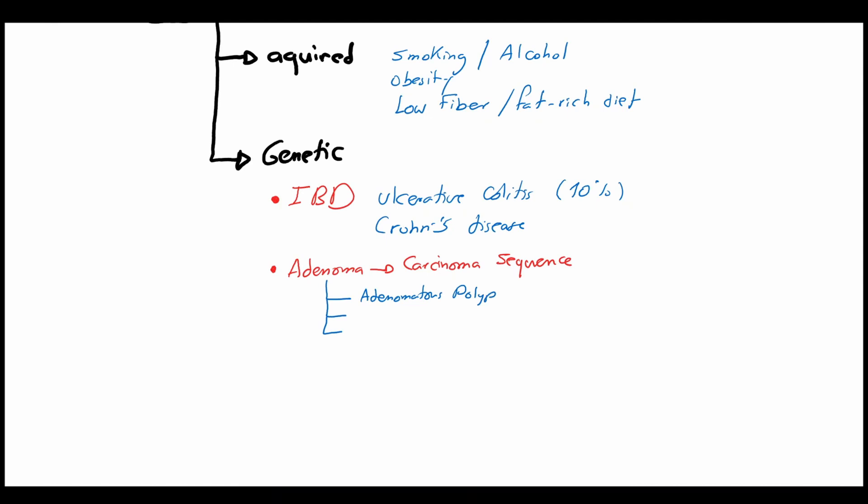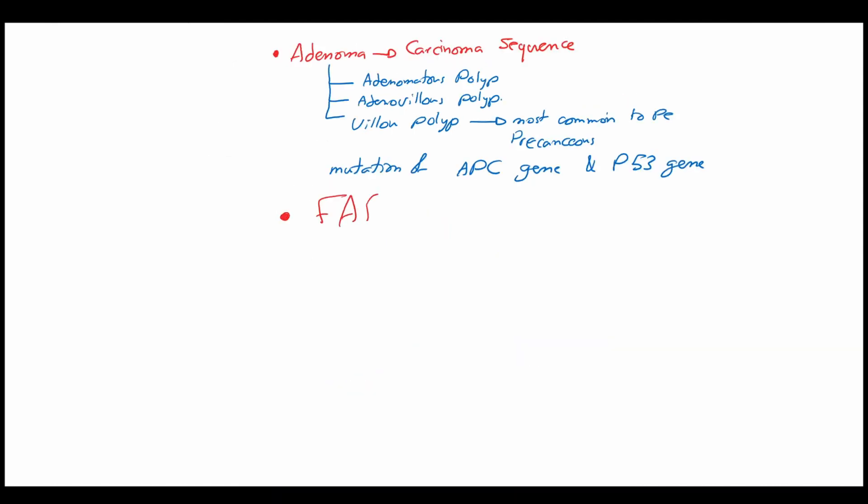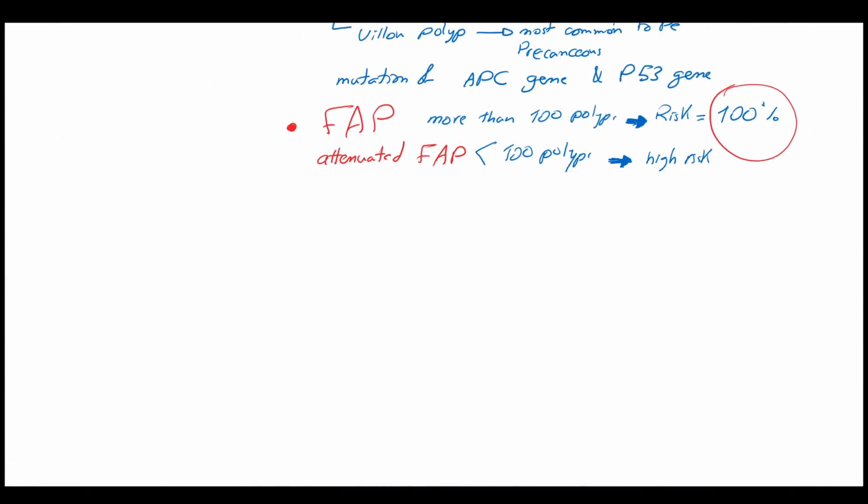This formation is due to a mutation of the APC gene and P53 gene. Another genetic predisposing factor is the familial adenomatous polyposis syndrome which is characterized by the presence of more than 100 polyps all over the colon. Here the risk of colorectal carcinoma is 100%. There is another type of the familial adenomatous polyposis which is attenuated type in which we can see less than 100 polyps in the colon which is also a high risk for colorectal carcinoma.